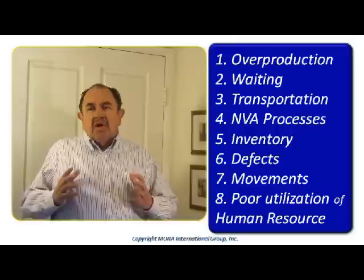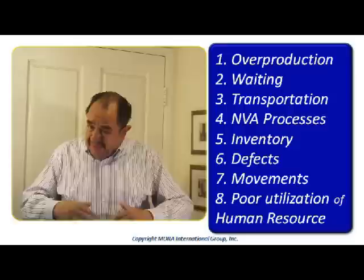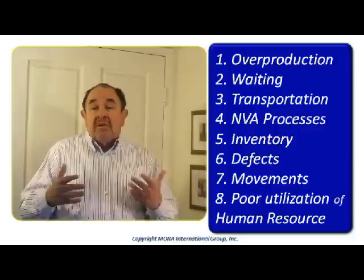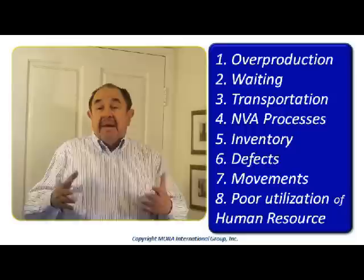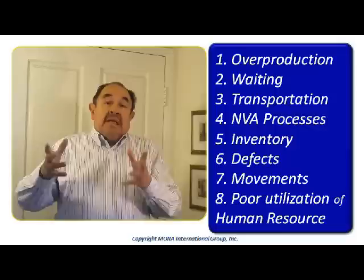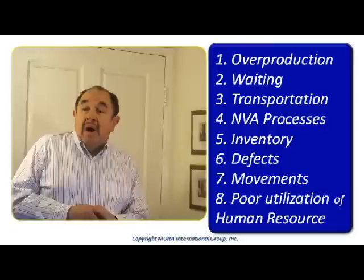Number three is transportation. This occurs every time we do an excessive movement of materials or products from one area to another. In the design and layout of our plant, we should always be conscious about this and bring things as close together as possible — the closer, the better; the easier to handle, the better. Accessibility is important. Transportation is a compensation for something that cannot be close enough, so let us try to reduce or avoid transportation altogether.